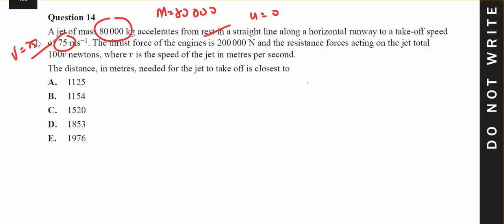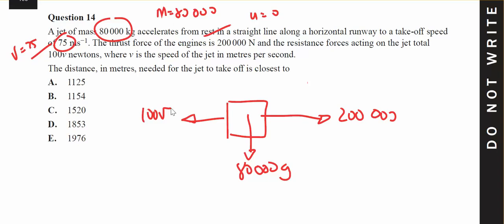The thrust of the engines is 200,000 newtons. So I think I need this - this is my jet, 80,000 kg. We've got a thrust force moving it at 200,000 newtons and a resistive force of 100v. Find the distance in meters.